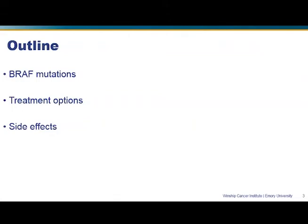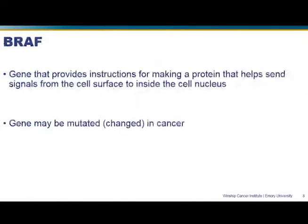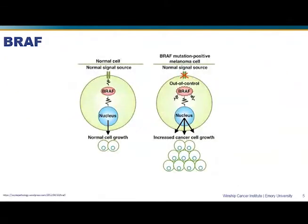BRAF is essentially a gene that helps provide instructions for making a protein that helps send signals from the outside of the cell to the inside of the cell — the cell nucleus. In cancer cells, specifically in some melanoma cells, this gene is mutated or changed, so there's an abnormality within that actual gene. When that occurs in a cancer cell, we refer to that as a BRAF mutation. You may also hear us refer to people who have BRAF wild type or BRAF non-mutated, meaning the gene is acting normally.